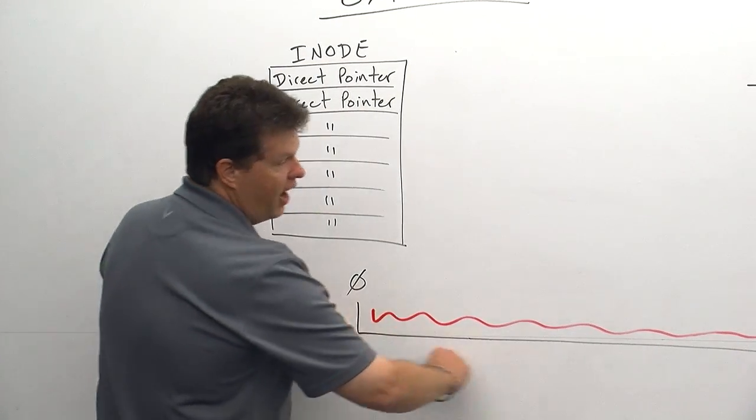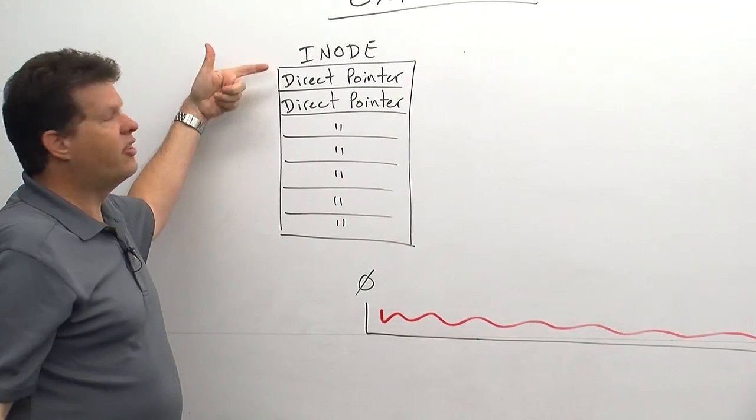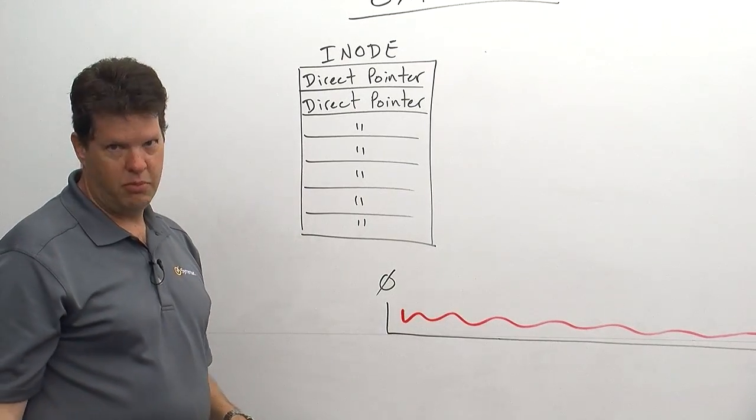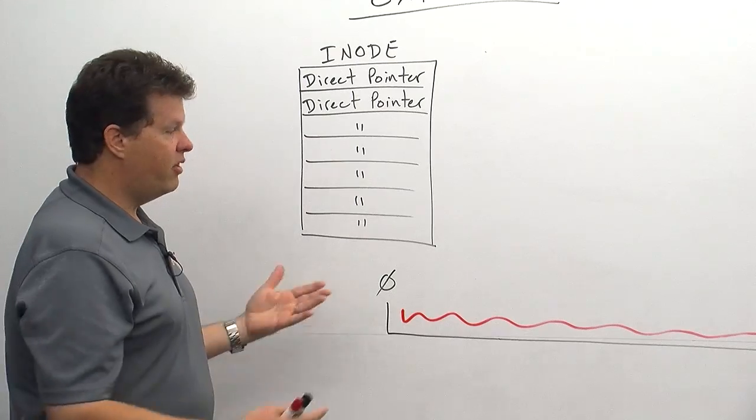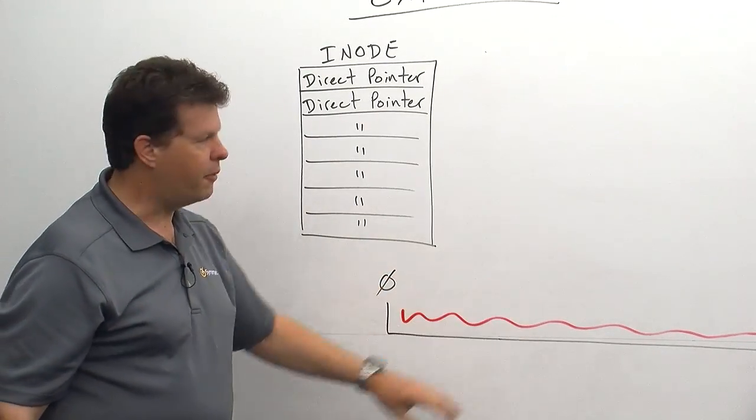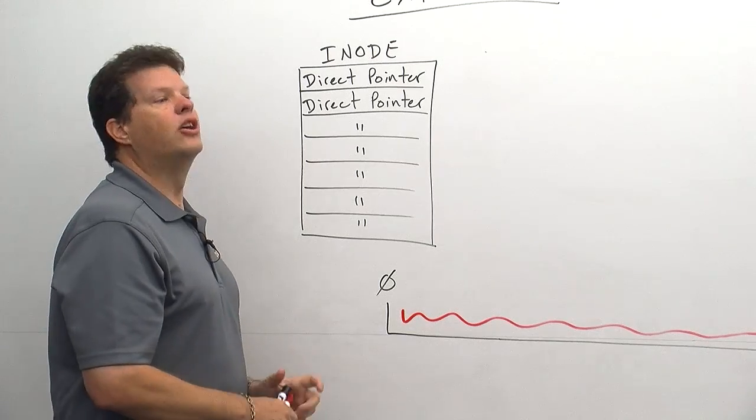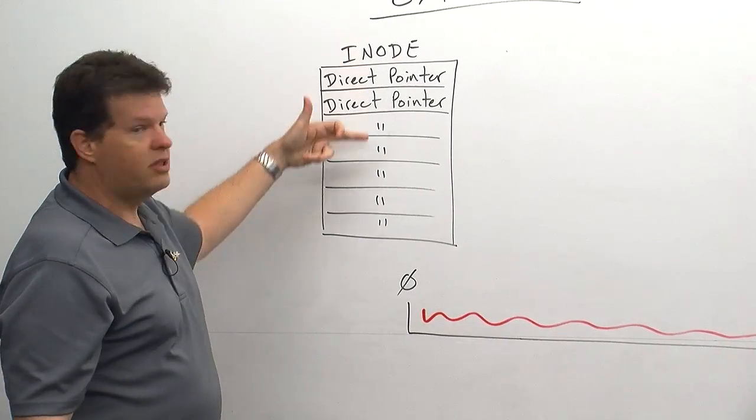So to find this in the inode, we're going to use a direct pointer. Now there's a series of direct pointers and there's also indirect pointers. The fewer pointers that we use, the better the file system and the better the accessing and retrieving information or writing data to the file. So each file has an inode, and in each inode, there's going to be a series of pointers.